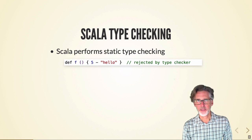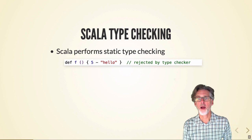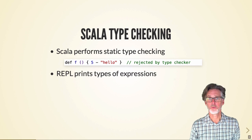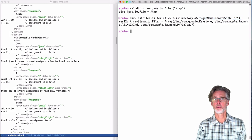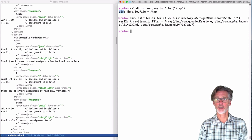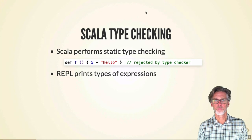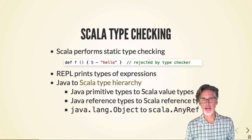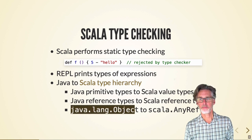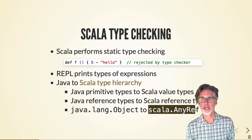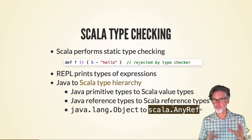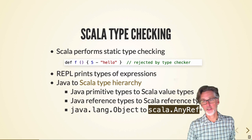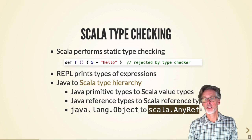Scala is a statically typed language — programs with type errors are rejected by the compiler. The REPL will also print out type information as you go. There's a large type hierarchy in Scala, but the important thing to know is that Java's Object type matches a type in Scala called AnyRef. Primitive types in Java map to primitive types in Scala, and reference types map to reference types.